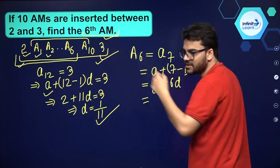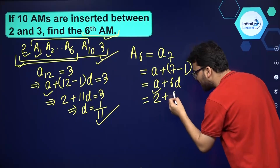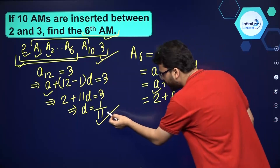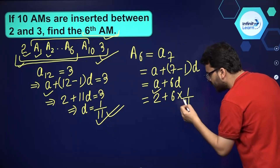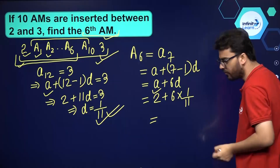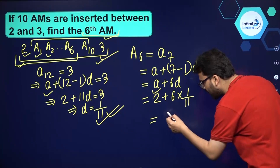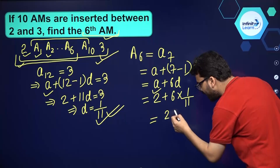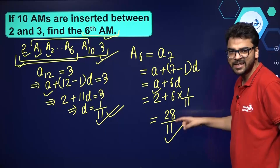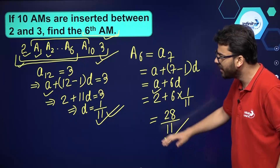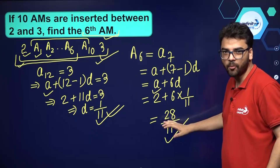A, the first term, is 2. So we have 2 plus 6 into D, and D is equal to 1 by 11. Simplifying: 11 times 2 is 22, plus 6 gives 28. So the answer is 28 upon 11. So we can say that the 6th arithmetic mean between 2 and 3 is 28 upon 11.